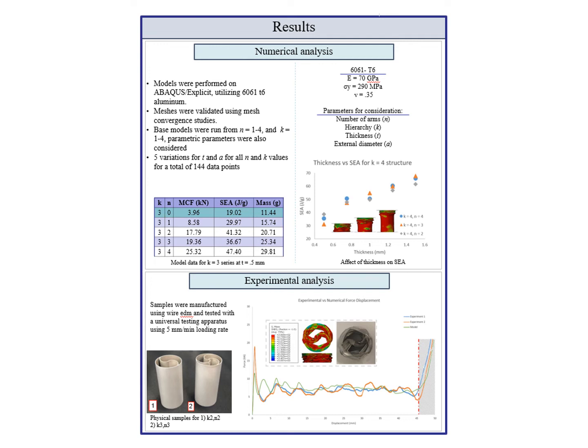The trends for these can be seen in the table in the middle left where an increase in the MCF, mean crushing force, and SEA, specific energy absorption, are shown with increasing N values when compared to a standard 2. A similar trend can be seen in the figure in the middle right where increasing thickness yields improving results for K equals 4 samples.